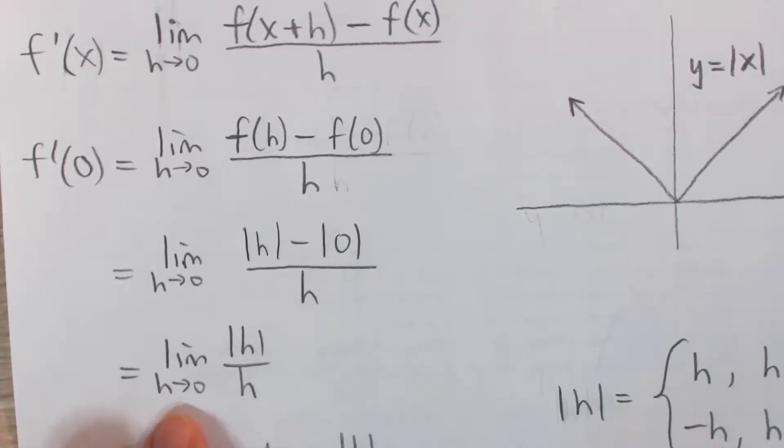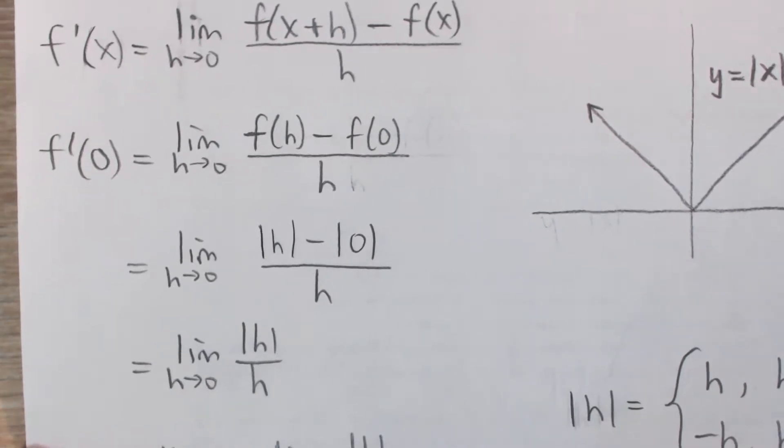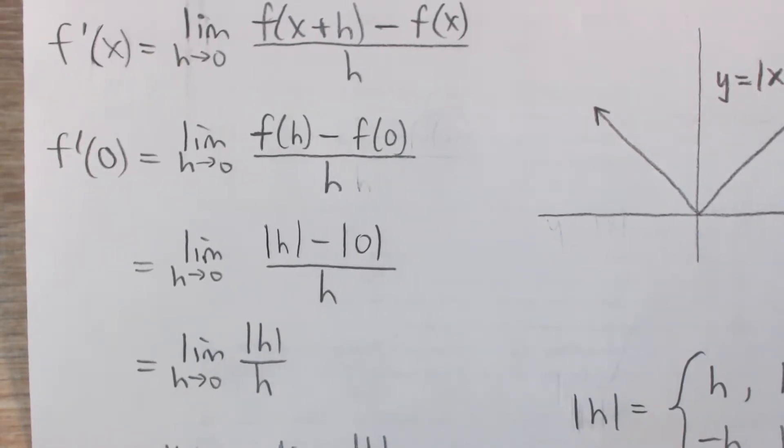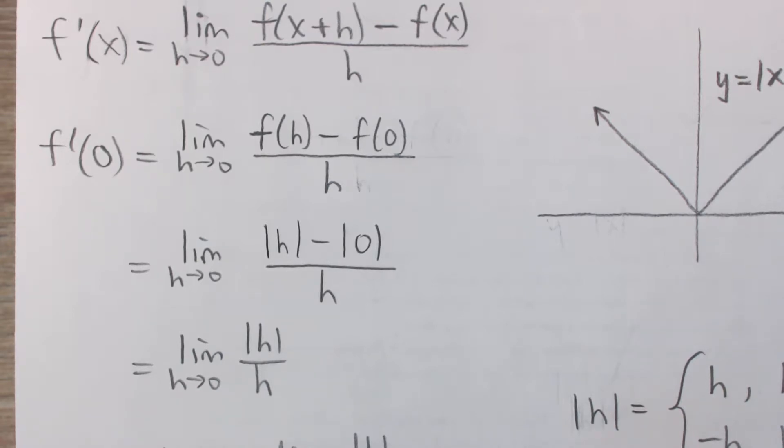Now, this limit is not exactly super easy to compute just thinking about it. So what we can do is take a look at the one-sided limits. If the one-sided limits are equal, then the limit exists and it's equal to those one-sided limits. And if they're not equal, then the limit does not exist.